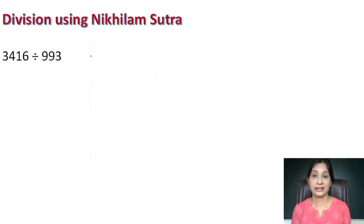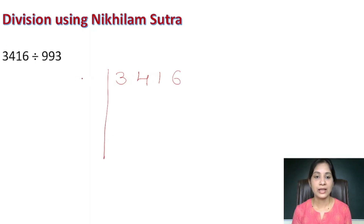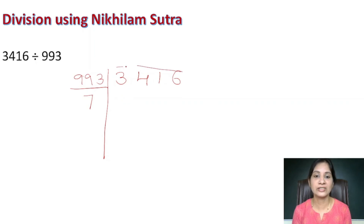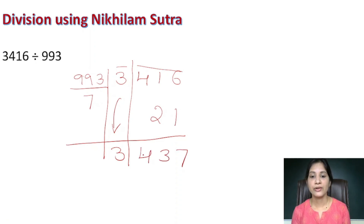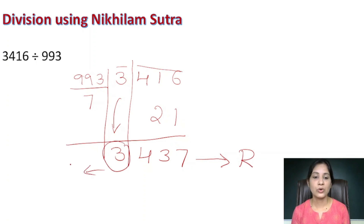Here is one more problem where the divisor 993 is near to 1000. For 3,416 divided by 993, the complement is 7, and we group into 3-digit groups. Write 3 as it is. Multiply 7 by 3: 21. Add to 416: gives 437. Since 437 is less than 993, this is the actual remainder and the quotient is 3.